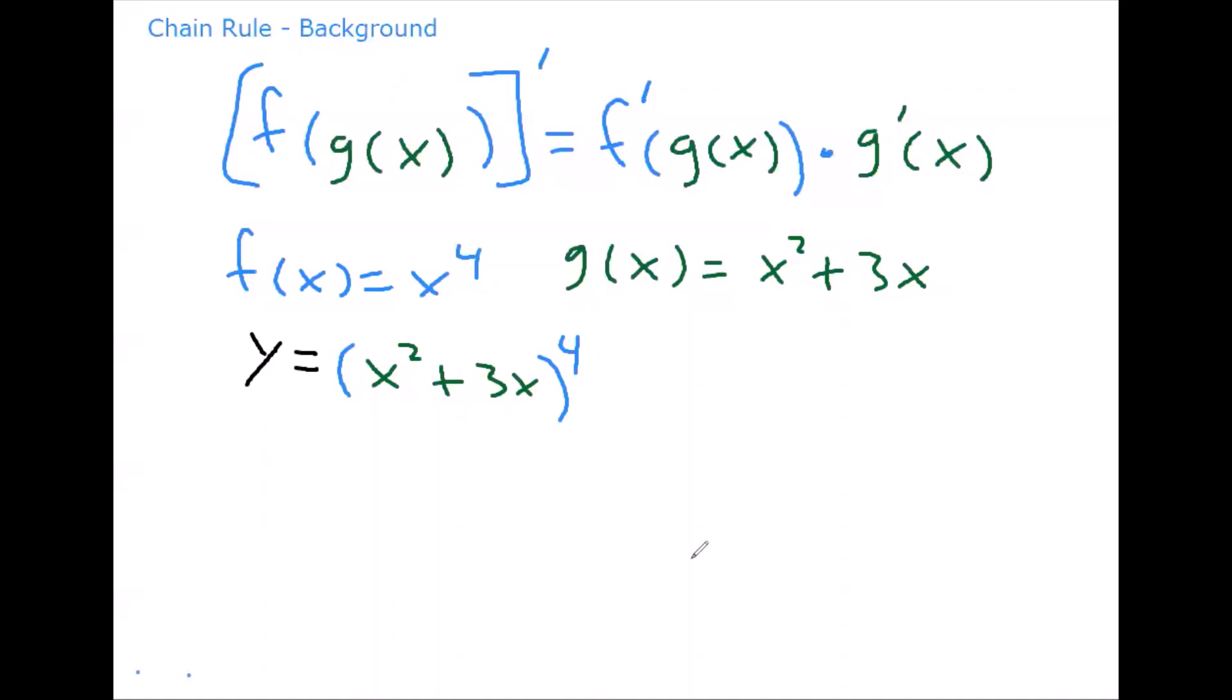And so in using chain rule I'm going to start by taking the derivative of the outside. So it's going to be four times the same inside to the third power. So the same inside, the x squared plus 3x stays the same. And then the derivative of the inside would be 2x plus 3.